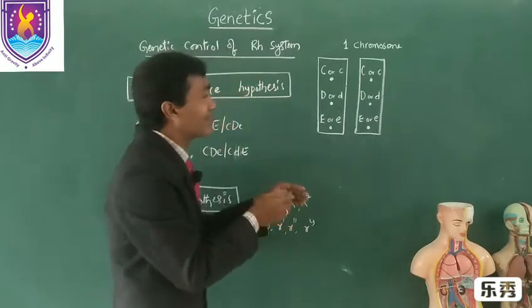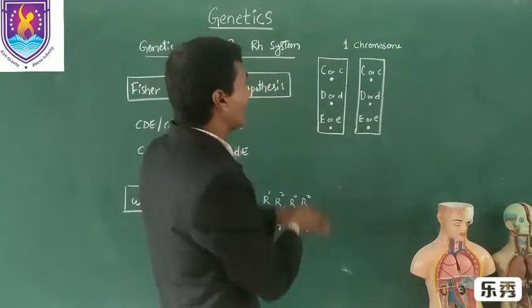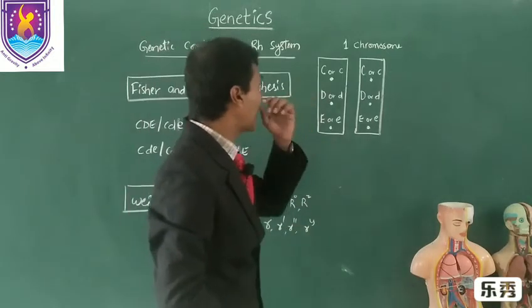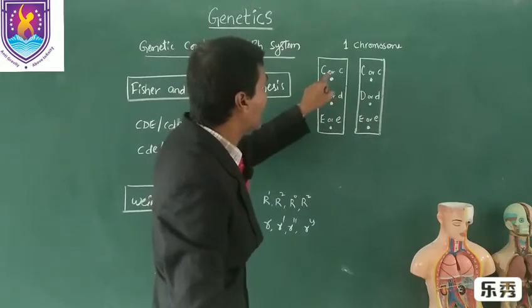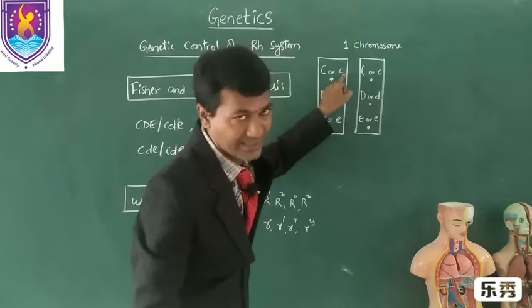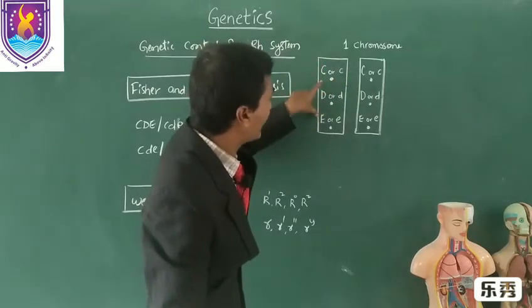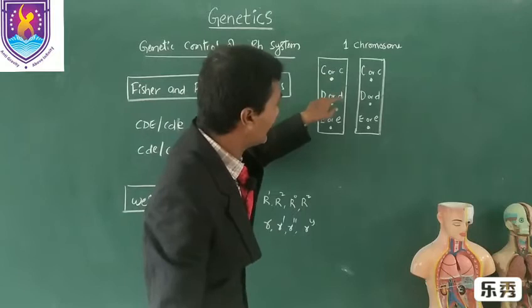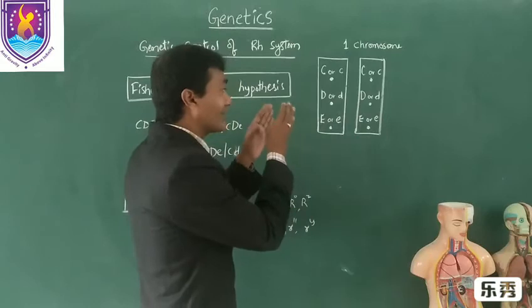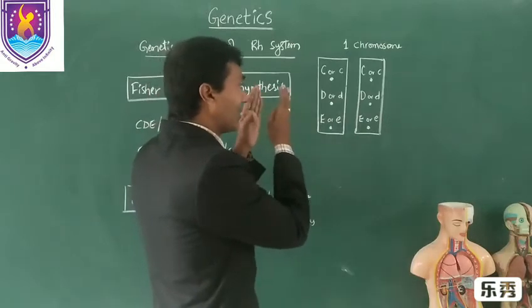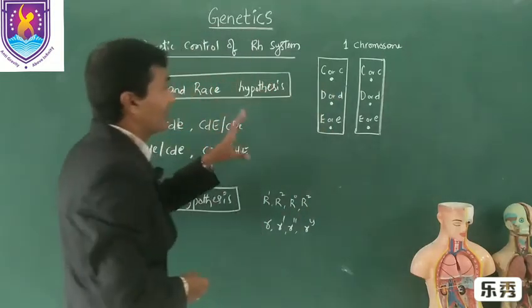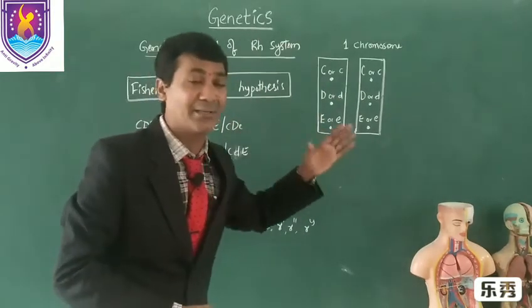These three alleles are very closely linked on the chromosome, very close locus of the first chromosome. The alleles are named as capital C and small c, capital D and small d, capital E and small e. Cde are dominant alleles and small cde are the recessive alleles. So these are closely linked alleles present on the first chromosome which produce the Rh positive in the person.